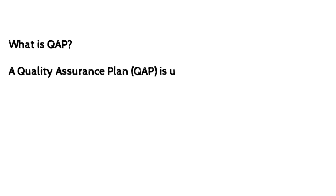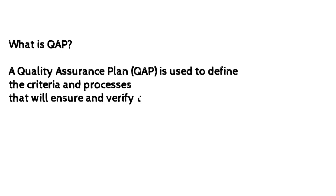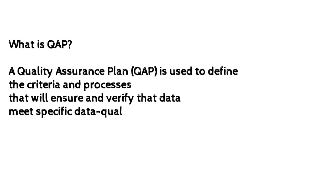What is a QAP? A quality assurance plan (QAP) is used to define the criteria and processes that will ensure and verify that data meet specific data quality objectives throughout the data life cycle.